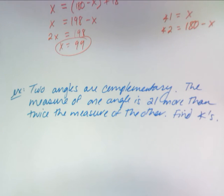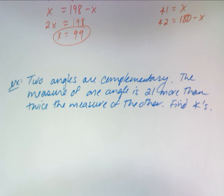Let's do another one. Two angles are complementary. The measure of one angle is 21 more than twice the measure of the other. Find the angles.